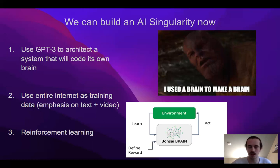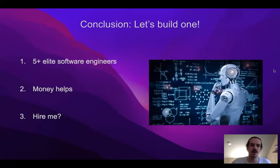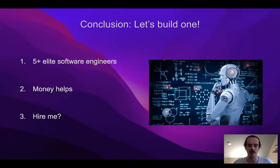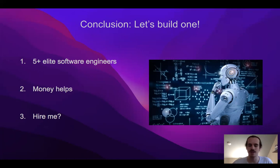Because of all the potential benefits, I think we should build it right now. Ideally a group of elite software engineers who are passionate, share this vision, and are really good at reinforcement learning could email me and we could come together and build it. Another option would be if a company such as OpenAI or Google DeepMind could hire me and we could use their current employees to work on it. Or if you want to invest, I'm sure your investment will pay off. Overall, I think it's in humanity's best interest to come together as a community and build one as soon as we can.